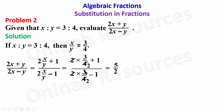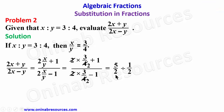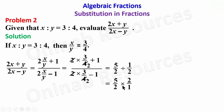The denominator is 3 over 2 minus 1, and that gives us 1 over 2. So we have 5 over 2 divided by 1 over 2. Transforming this division to multiplication, we have 5 over 2 times 2 over 1. This 2 cancels this 2, and our final answer is 5.